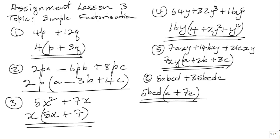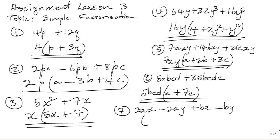Number 7 is 2AX minus 2AY plus BX minus BY. Once you have four terms, if you look carefully there's nothing that is common to all four terms. So with this one, we have to do factorization by grouping. We look on the first two terms and see what is common — 2A is common to both the first two terms, so you take out 2A.